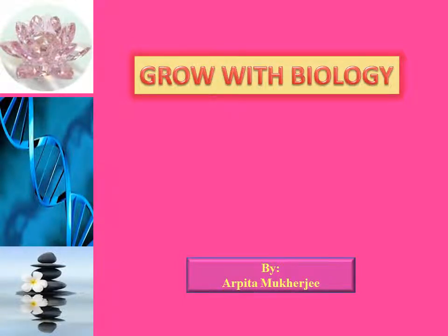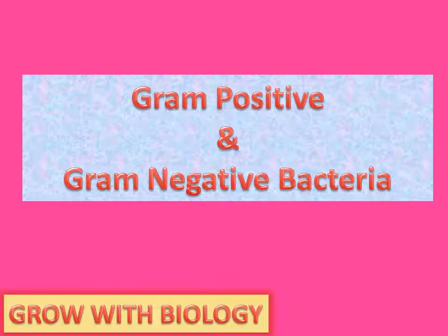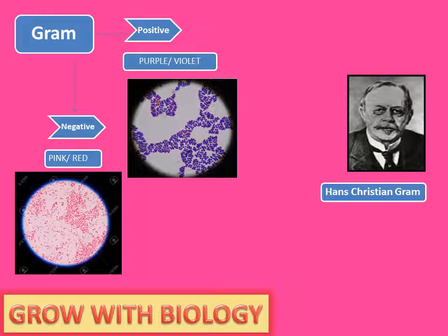Good morning friends. Welcome to Web Biology. Today's topic is the difference between gram positive and gram negative bacteria. Gram positive and gram negative are two types of bacteria which we observe after performing gram staining. This was given by Hans Christian Gram. Gram positive bacteria appears purple in color after gram staining, while gram negative bacteria appears pink in color.